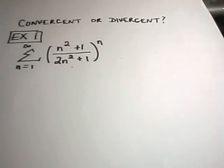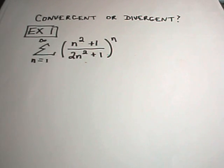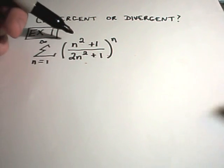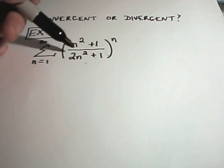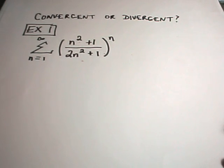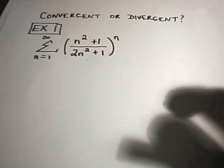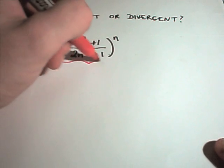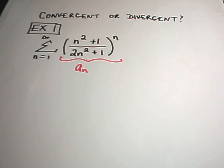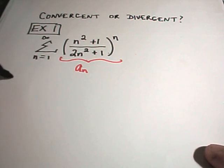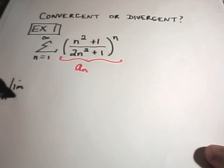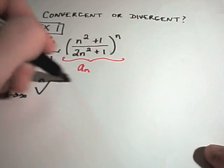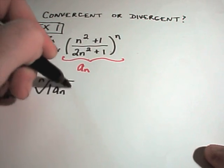So let's do a few examples here. The first one we want to do is the series from 1 to infinity of n squared plus 1 over 2n squared plus 1 all raised to the nth power. Well, the stuff on the inside, that's what I'm calling my a sub n's. So here are the a sub n's. It says we have to take the limit as n goes to infinity of the nth root of the absolute value of the a sub n's.